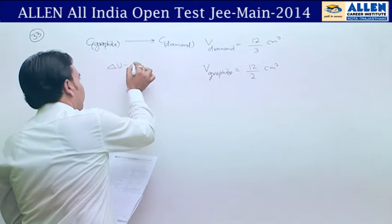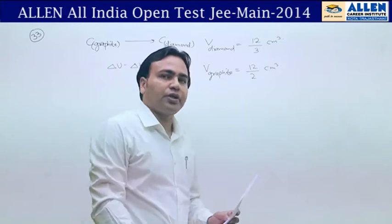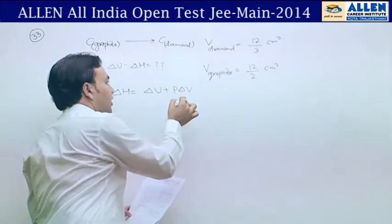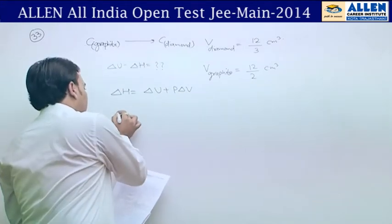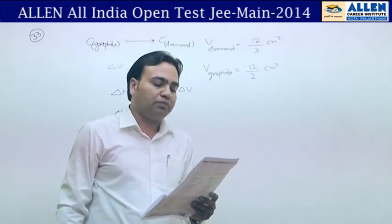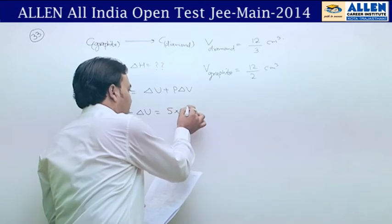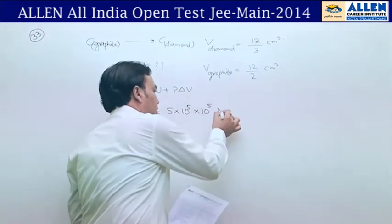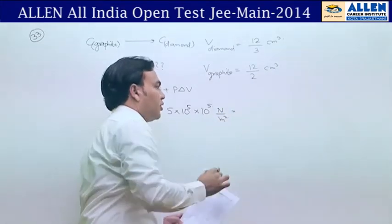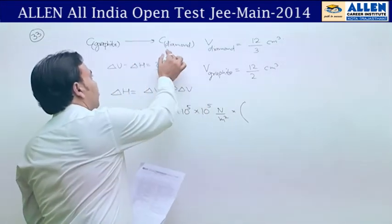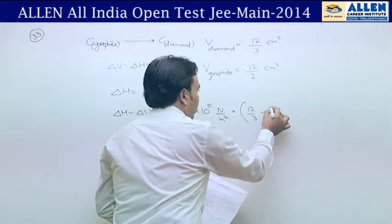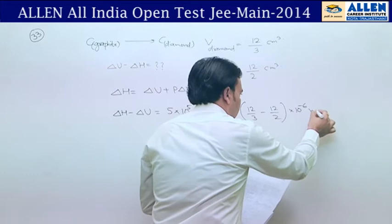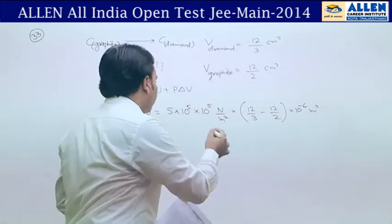We need delta U minus delta H. We have the relationship delta H equals delta U plus P·delta V. Substituting, pressure is given as 10⁵ Pa (Newtons per meter square), and delta V equals final volume minus initial volume: 12/3 minus 12/2. This volume is in cm³ and we have to convert to the MKS system, multiplying by 10⁻⁶.